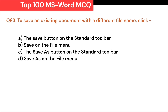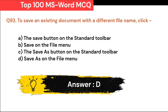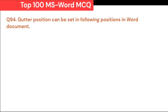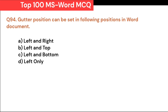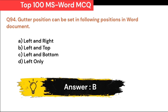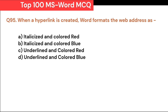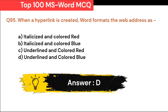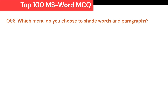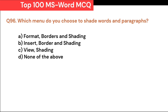The ribbon in Word 2007 consists of a series of: A. Tabs. B. Smaller ribbons. C. Gates. D. Icons. Correct answer is A. Tabs. To save an existing document with a different file name, click: A. The Save button on the standard toolbar. B. Save on the File menu. C. The Save As button on the standard toolbar. D. Save As on the File menu. Correct answer is D. Save As on the File menu. Gutter position can be set in the following positions in a Word document: A. Left and right. B. Left and top. C. Left and bottom. D. Left only. Correct answer is B. Left and top. When a hyperlink is created, Word formats the web address as: A. Italicized and colored red. B. Italicized and colored blue. C. Underlined and colored red. D. Underlined and colored blue. Correct answer is D. Underlined and colored blue.